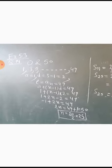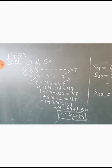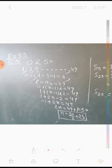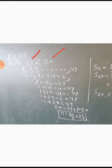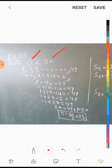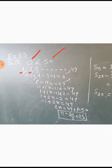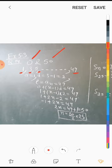Question number 14, Exercise 5.3: Find the sum of odd numbers between 0 and 50. The odd numbers between 0 and 50 are 1, 3, 5, ... 49. So the first term a is 1, and the common difference d is 3 minus 1 equals 2.